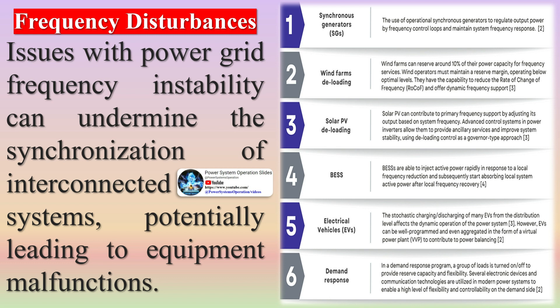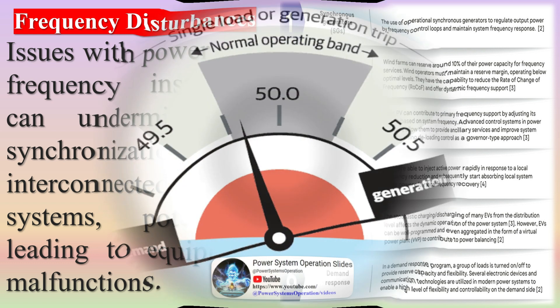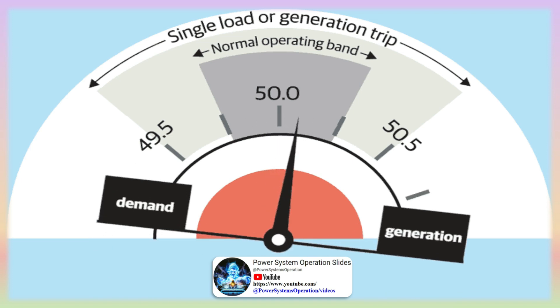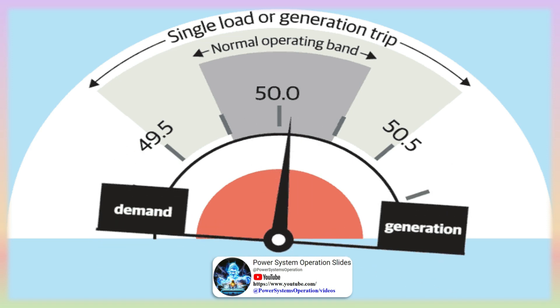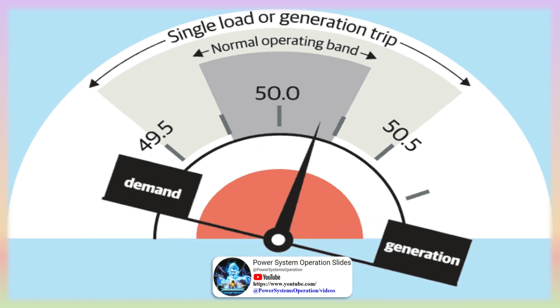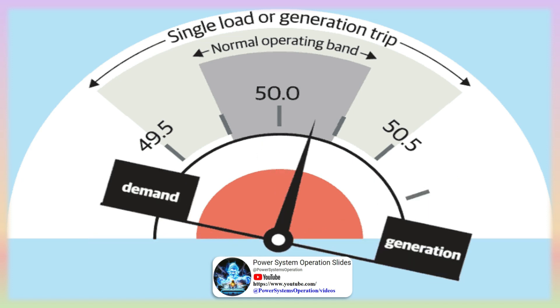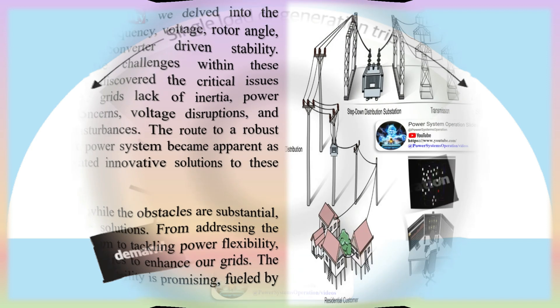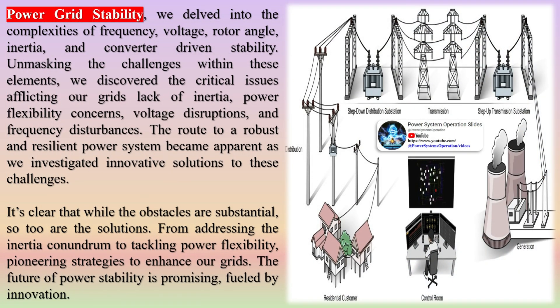Voltage instability in the grid can result in fluctuations that interrupt the seamless flow of electricity, and abrupt voltage changes threaten the reliability and functionality of electrical equipment. Frequency instability can undermine the synchronization of interconnected systems, potentially leading to equipment malfunctions. In summary, the critical issues afflicting our grids include lack of inertia, power flexibility concerns, voltage disruptions, and frequency disturbances.